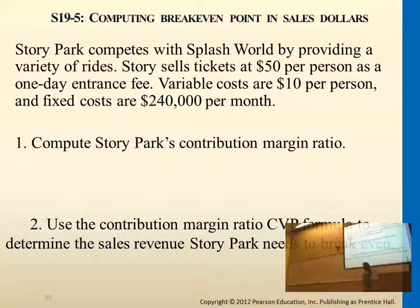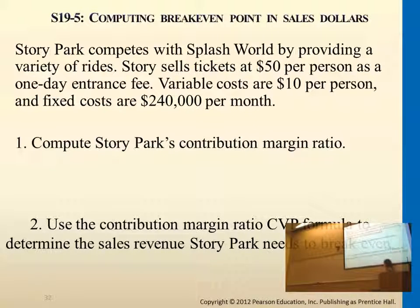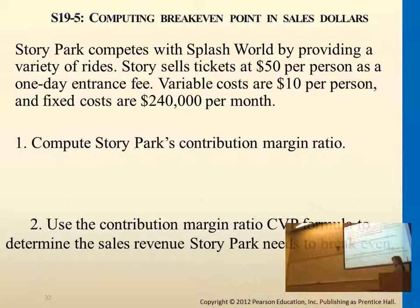Once you have this ratio, the next question is: how many 0.8s do we need in order to cover the fixed cost of $40,000? We divide the fixed cost by 0.8 to understand what sales revenue we need to generate.